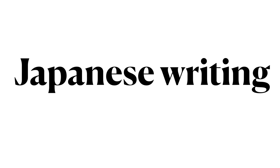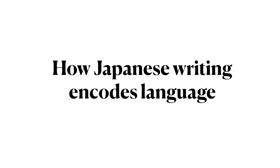This course is divided into multiple modules. In this module, we are examining the question: how does writing as a technology represent language? In this recording, we are examining the Japanese writing system and looking at how the Japanese writing system encodes the Japanese language.